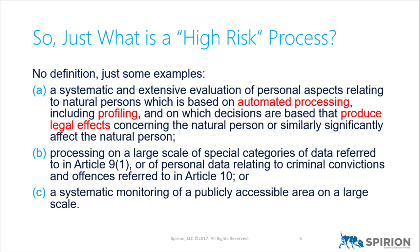Decisions based on automated processing produce legal effects, but I haven't seen jurisprudence I'd rely on to clarify what 'legal effects' means — so item A is not terribly helpful at this point. The second example is processing on a large scale of special categories of data. If you're a hospital, you can pretty much guarantee it's high risk because medical data is Article 9 special data. Processing criminal records — for example, checking if someone's eligible to vote — is almost certainly high risk. Systematic monitoring of publicly accessible areas, such as using facial recognition or license plate recognition on freeways, is definitely a high-risk process. So B and C are much easier to work with.